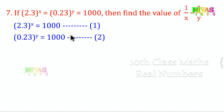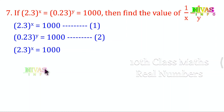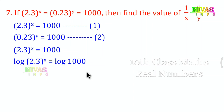These two equations are solved separately. We need to find 1 by x minus 1 by y. We apply log to both sides of the first equation: log(2.3) to the power x equals log 1000. Both sides have log applied.